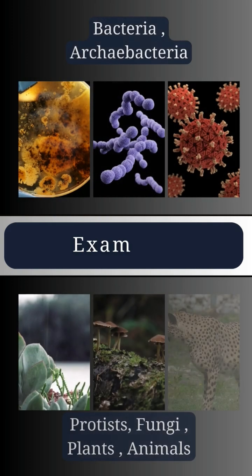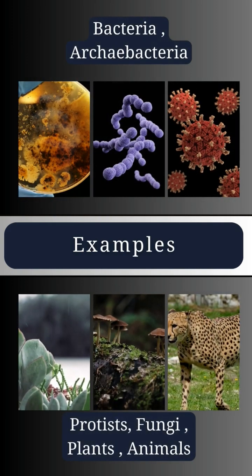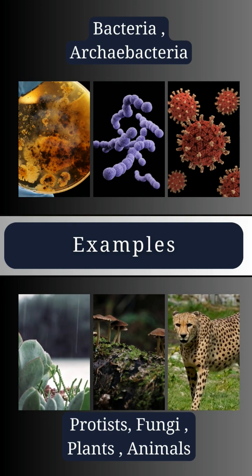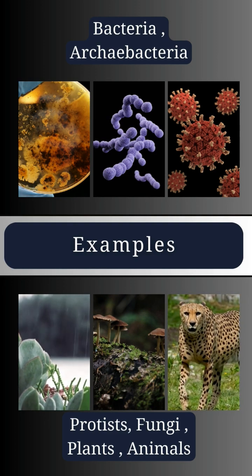Examples of prokaryotes are bacteria and archaebacteria. Eukaryotes include protists, fungi, plants, and animals.